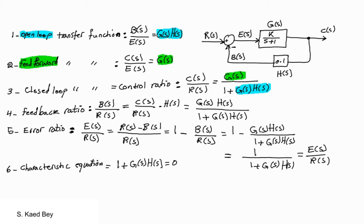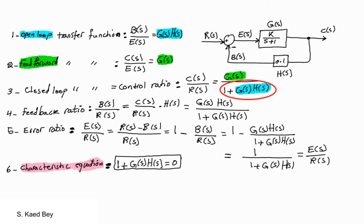The characteristic equation can be found by setting the denominator of the closed-loop transfer function to zero. The characteristic equation has lots of information about the system's stability and the general behavior.